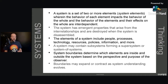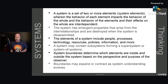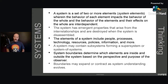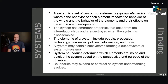Going further, a system has emergent properties that arise from the interrelationships, which are destroyed when the system is disassembled. Going back to our car analogy: let's say you have a 500 horsepower engine in your vehicle. That engine, with the right transmission, differential, and all the other moving parts, results in that car being able to go from zero to 60 really quickly. But if we disassemble that system — if we take that 500 horsepower engine out of that car and just place it in a storage location — how fast can that engine go? The answer is zero miles per hour.